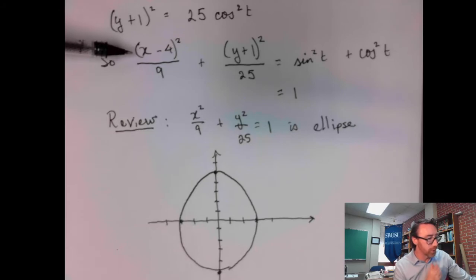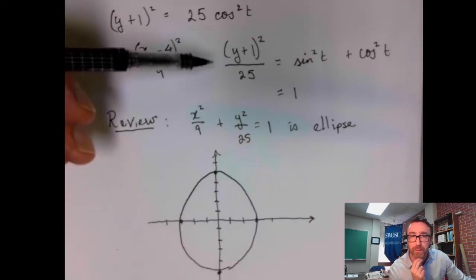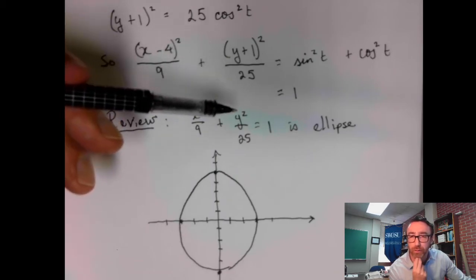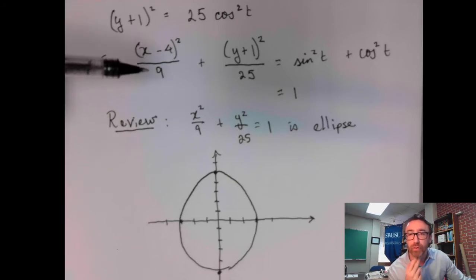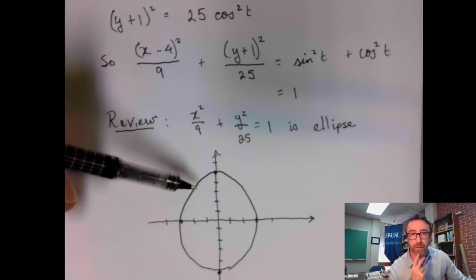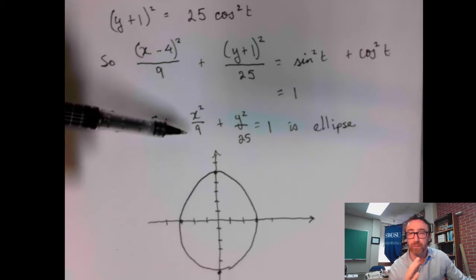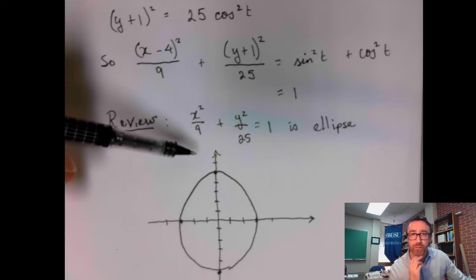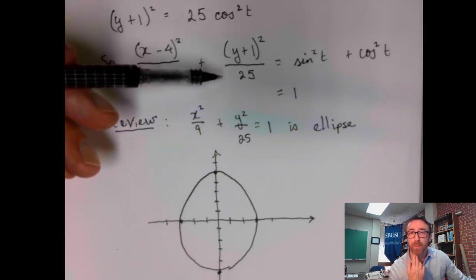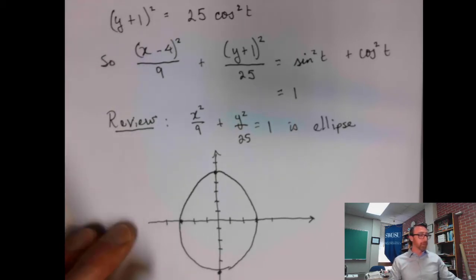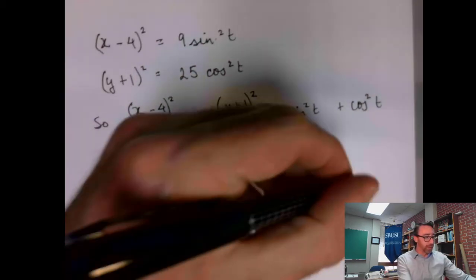And this would just shift 4 units to the right and 1 unit down. Because think back to your algebra once again. If you have a graph and you know what that graph is looking like here, well, the only difference is we replaced x with x minus 4. So that's going to give us a horizontal shift. We replaced y with y plus 1. That's going to give us a vertical shift. So that would be our graph. We would have an ellipse.